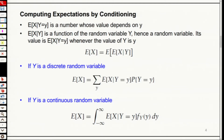Its value is E[X|Y=y]. Whenever the value of Y is lowercase y, if you fix that y value, you get a specific value of E[X|Y=y]. So to make it very clear: if you fix y, this is automatically a number. Not random — deterministic.